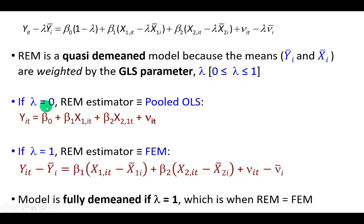If lambda is zero, then this random effects model will default to pooled OLS because if you multiply the means by zero, it's going to come down to this. And if lambda is one, then the random effects model estimator will default to fixed effects model. If you multiply the means by one, it's going to come down to this, which is said to be fully de-meaned.